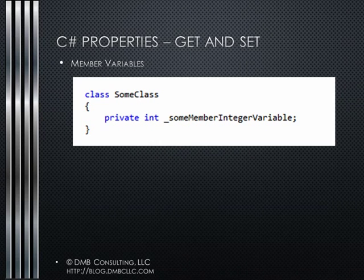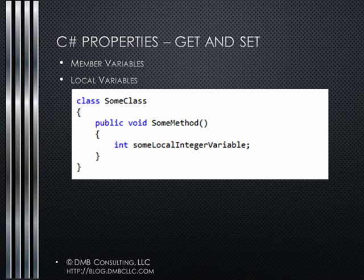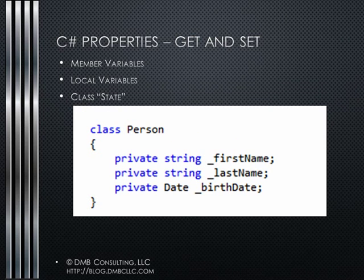A class has member variables that are typically scoped as private, although they could be, but shouldn't be, scoped as public. You would see those as private int underscore some member integer variable inside a class definition, but not in the methods. You'll also sometimes see this referred to as a field. I call them member variables because that's what I learned them as back when I was doing C++. If the variable is in a method, it's called a local variable. The reason we have member variables is because they hold the state of the object. For example, you might have a person class — the person class would have first name, last name, and birth date as member variables, so that when the class is created and becomes an object, they can hold the state of the person: Dave, Bush, and 6/20.